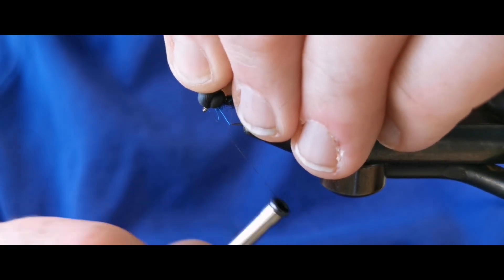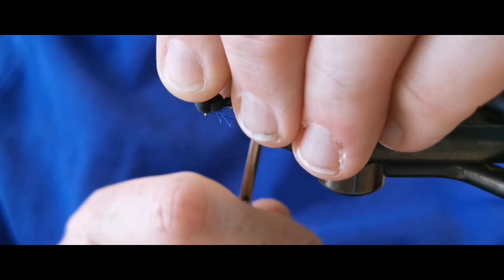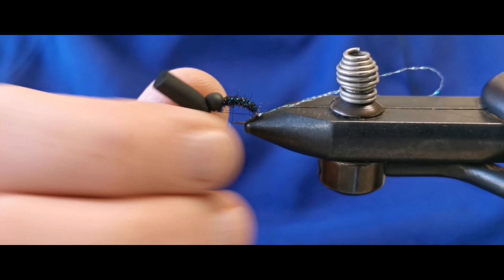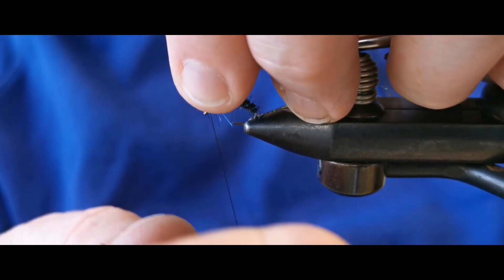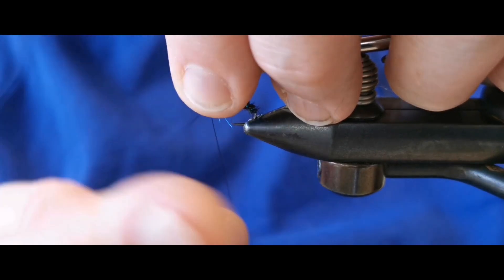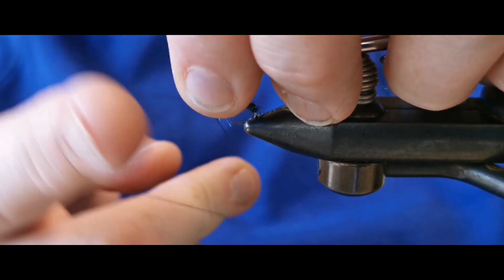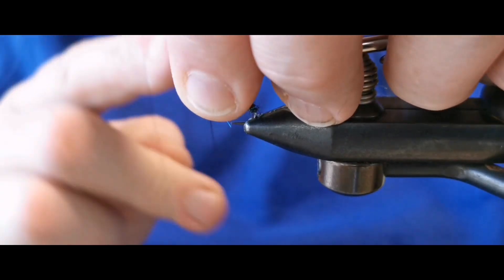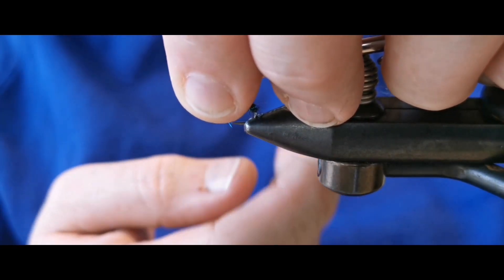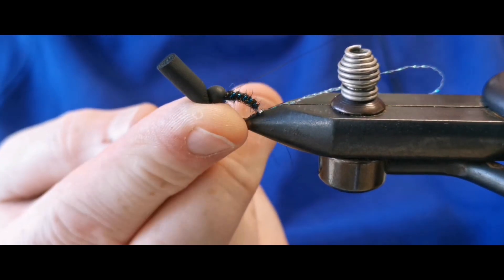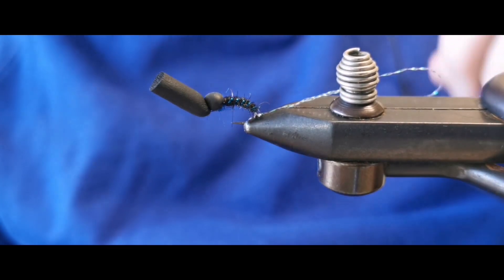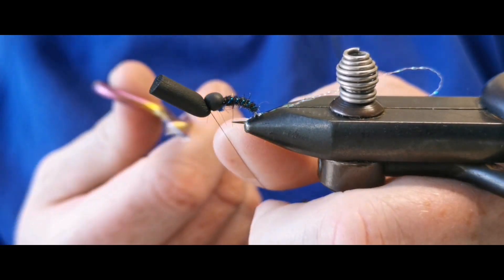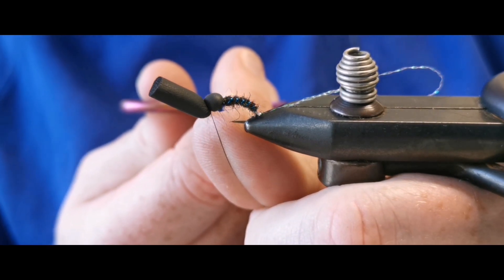And then to finish our fly off, pull our foam back, come on behind the eye, and as I said before I always will finish by hand. So underneath the foam and behind the eye of the hook, I'll pick a three or four turn finish. Come on then and trim away our excess.